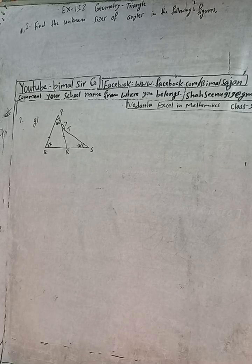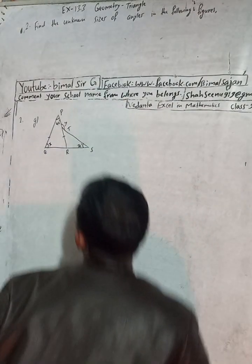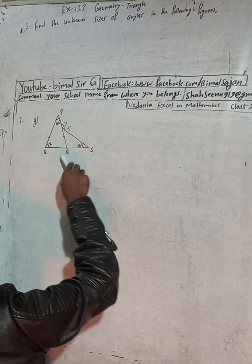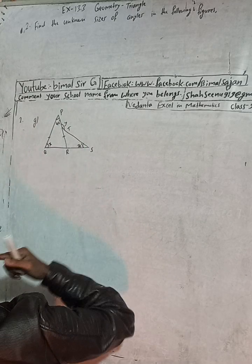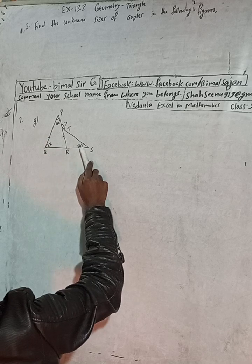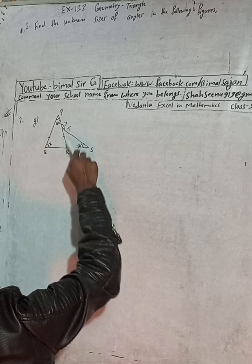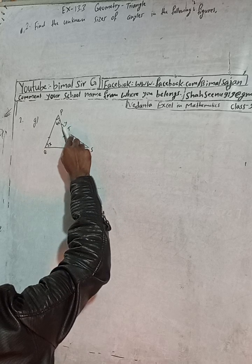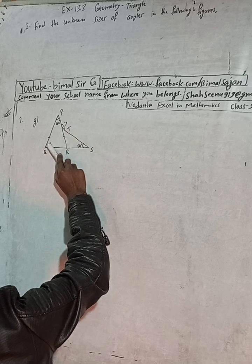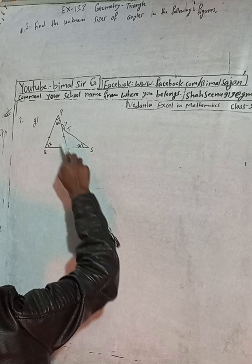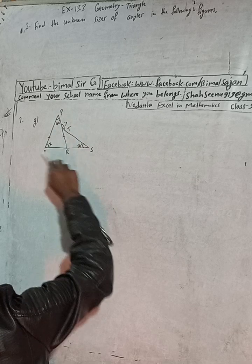This is question number 2G. Here you can see triangle PQR — this angle is 40 degrees, this is X, this is 30 degrees, and this is the external angle of TRS, which is Y. We need to find angle Y and angle X. It is also given that PQ is equal to PR, which means this triangle is an isosceles triangle.